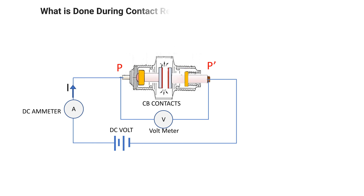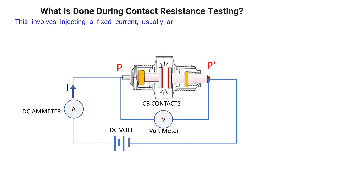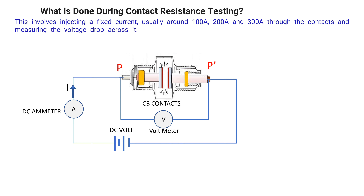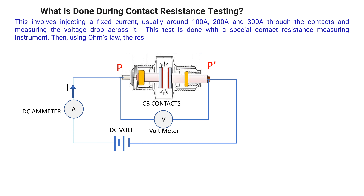What is done during the contact resistance test? This involves injecting a fixed current — usually around 100 amperes, 200 amperes, or 300 amperes — through the contacts and measuring the voltage drop across them. This test is done with a special contact resistance measuring instrument, and using Ohm's law the resistance value is calculated.